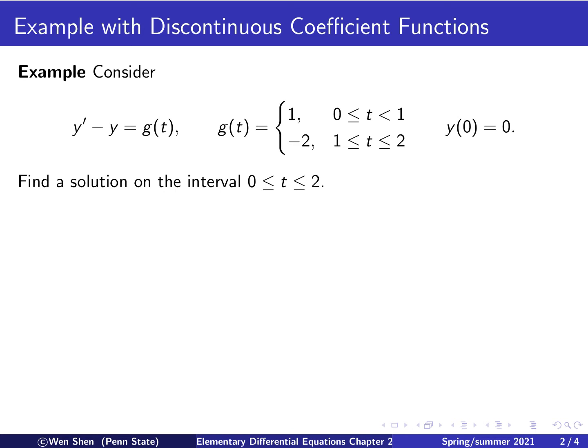We want to find a solution, y of t, on the interval t between 0 and 2, where the g function is given. Note that the function g here is discontinuous on this interval. At t equals 1, it has a jump from 1 to negative 2.